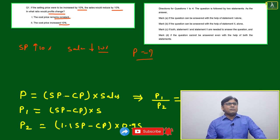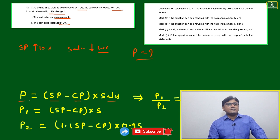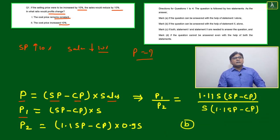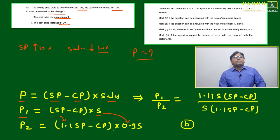We write it in simple format: profit P = (selling price minus cost price) × sales. So P1 = (SP - CP) × S. For P2, since selling price is increased by 10% and sales are reduced by 10%, it becomes (1.1 SP - CP) × 0.9S.